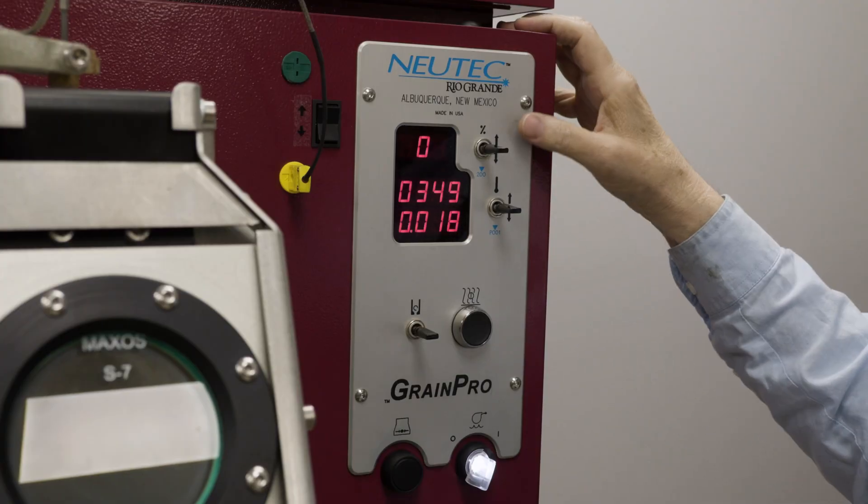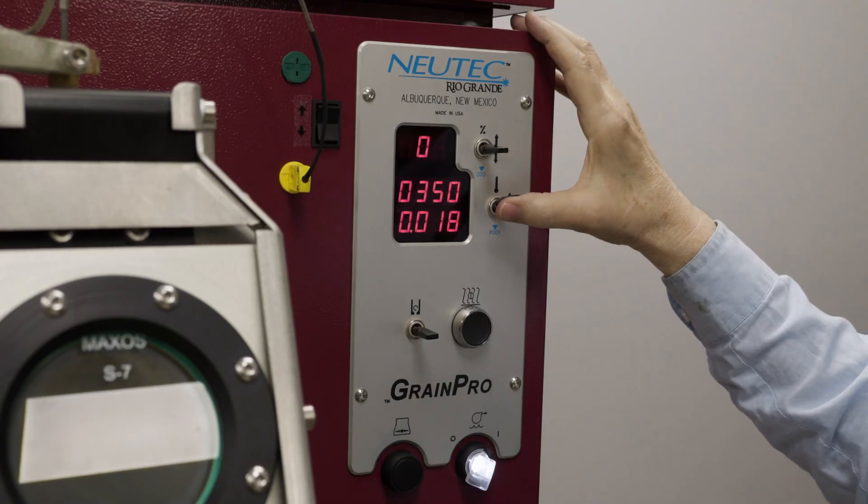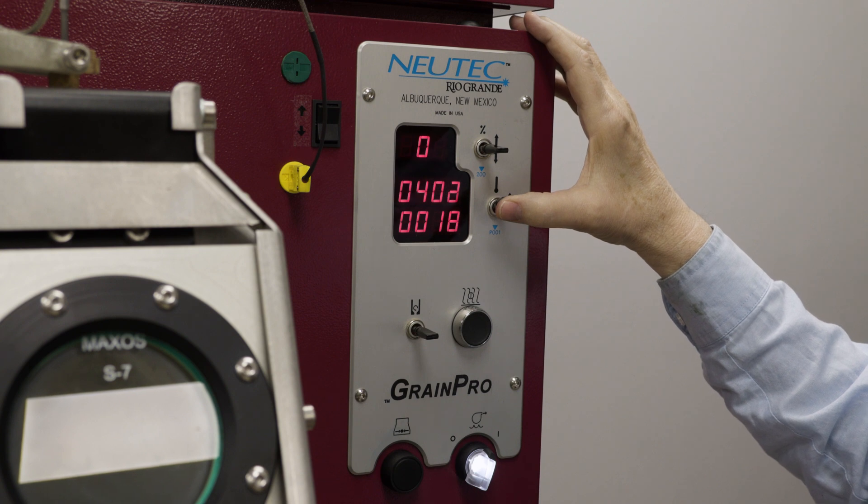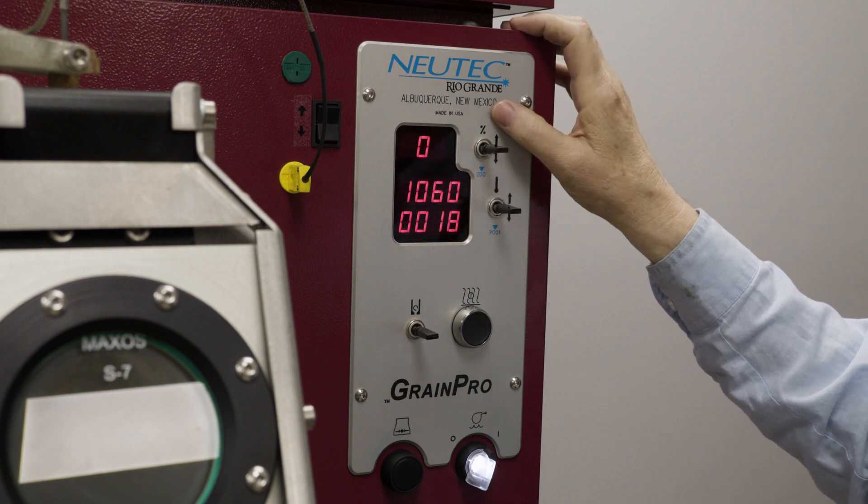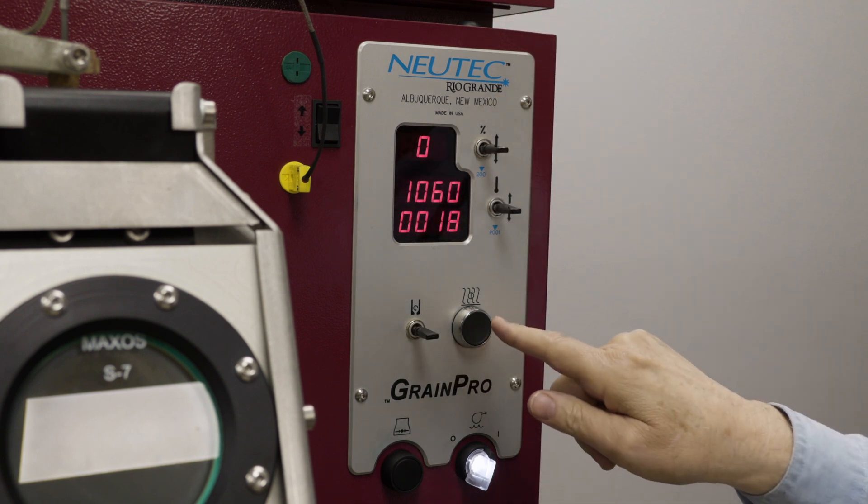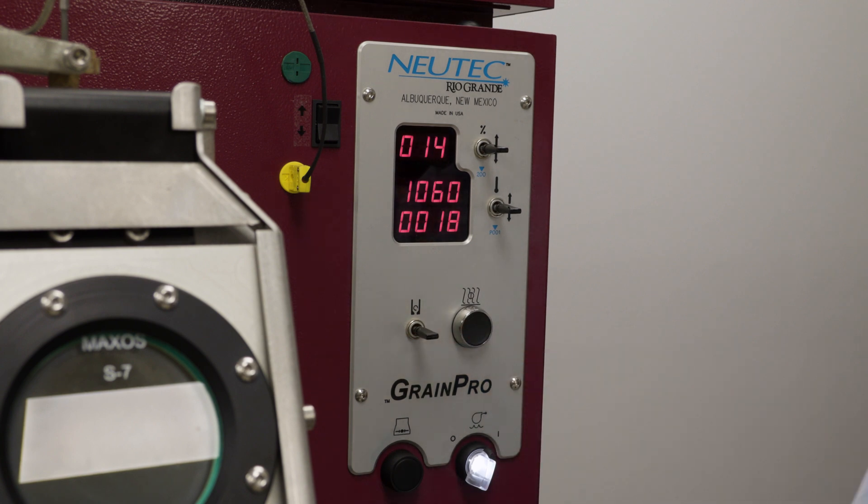Next, we're going to set the temperature and we're going to be doing some sterling silver. So I'm going to set this to 1060. Make sure the power is at 100% and hit heat. Now we're just waiting for it to heat up.